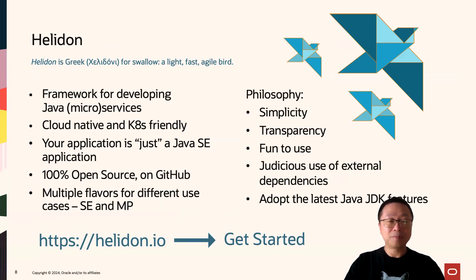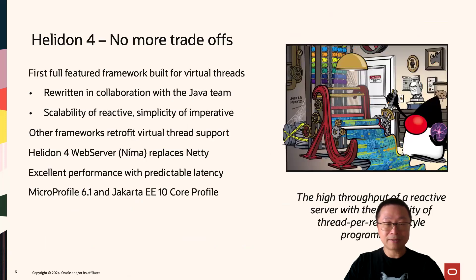Helidon is an open-source microservices framework — the landing page is helidon.io. It is very small, lightweight, and efficient. The claim to fame for Helidon is that it is built from the ground up using Java Virtual Threads, making it highly scalable up to millions of virtual threads on one JVM. The benefit is that you get the performance of reactive-style or asynchronous code with the simplicity of imperative-style coding. The code is much more readable, with none of the poor debugging, inability to step through code, or poor stack traces associated with reactive-style coding.